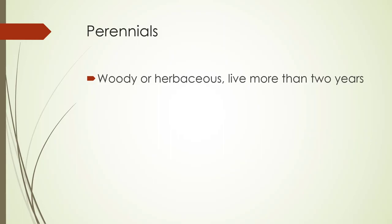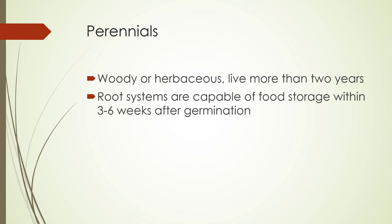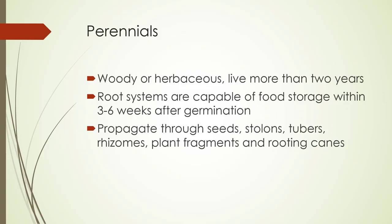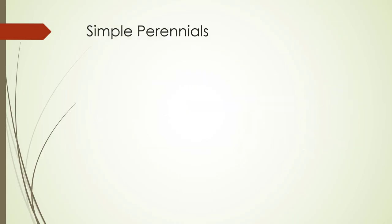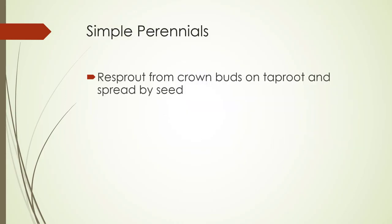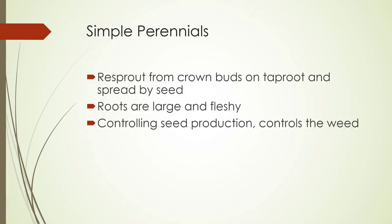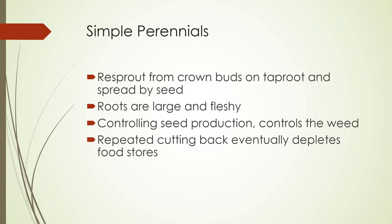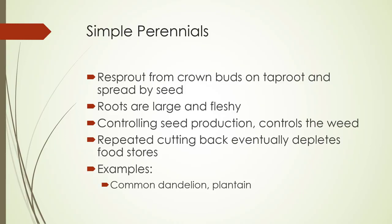Perennials can be woody or herbaceous and live more than two years. Their root systems are capable of food storage within three to six weeks after germination. They propagate through seeds, stolons, tubers, rhizomes, plant fragments, and rooting canes. Simple perennials re-sprout from crown buds on a taproot and spread by seed. Roots are large and fleshy. If you control seed production, you're able to control the weed. You can try cutting it back often — it eventually depletes the food stores. The dandelion is a perfect example of this.